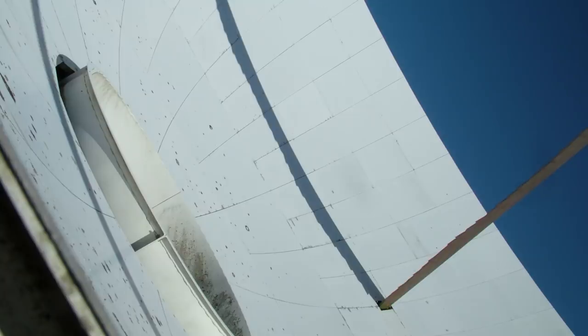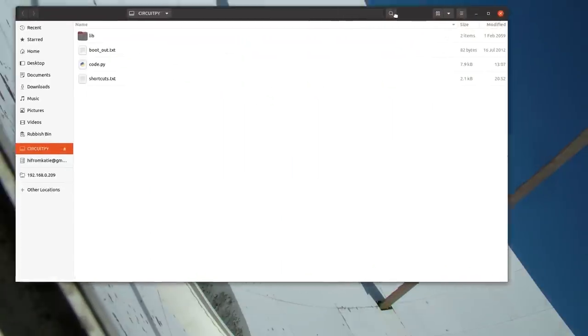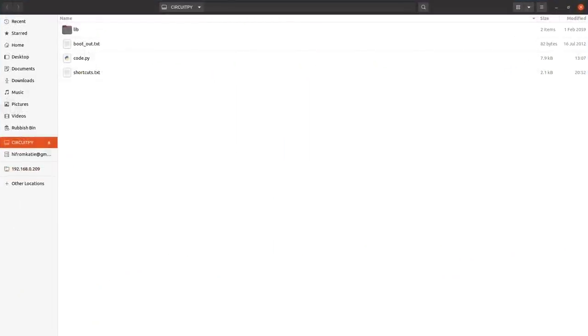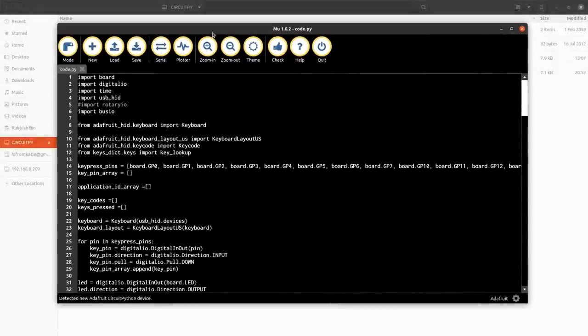So when we first plug it in the first thing to do is to install CircuitPython on the board. Once that has been installed it will then come up as this CircuitPython folder with our code on it. Now if I open the MU editor which is what they recommend for using when you've got CircuitPython on it. We get this editor so I can import the board. That gives us all the board information, digital IO, time.